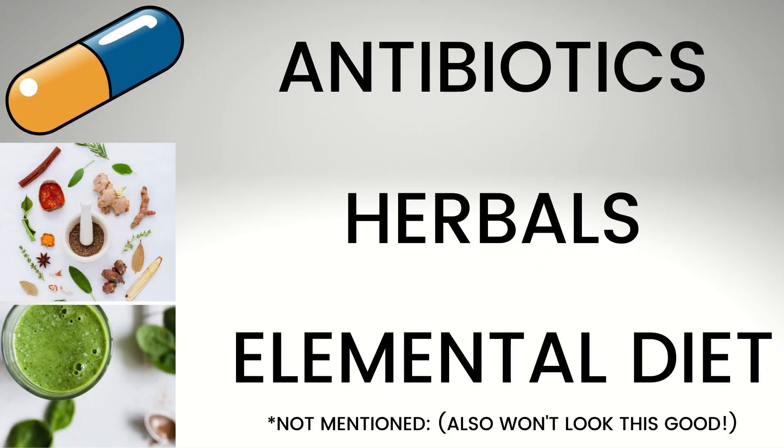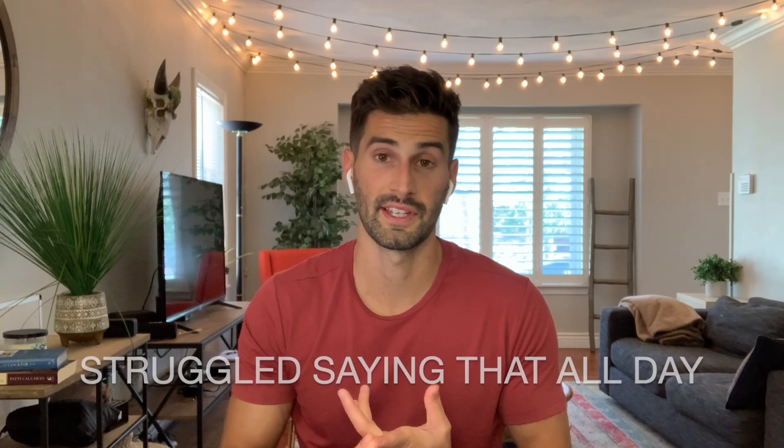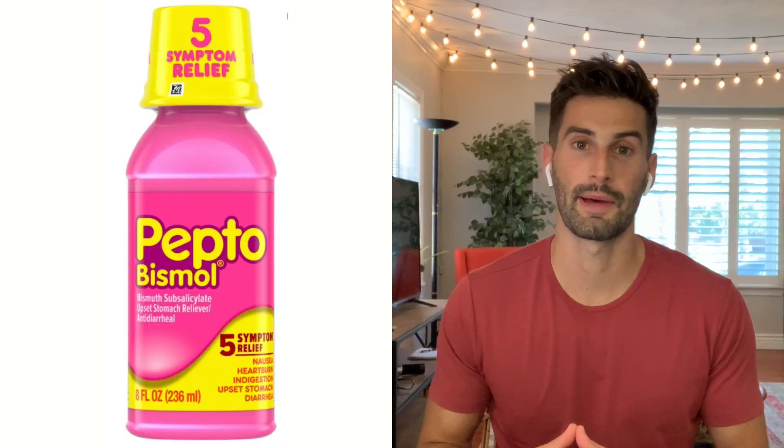In terms of treatment for hydrogen sulfide SIBO, this is still a hotly debated issue. As of right now, a lot of the treatment options seem to be similar to those for hydrogen dominant SIBO, which include antibiotics such as Rifaximin and antimicrobial herbs. In addition, there's another treatment worth mentioning — bismuth salicylate — which has some potentially strong evidence for its future use, although more studies are probably needed. You may recognize it as the active ingredient in regular Pepto-Bismol.